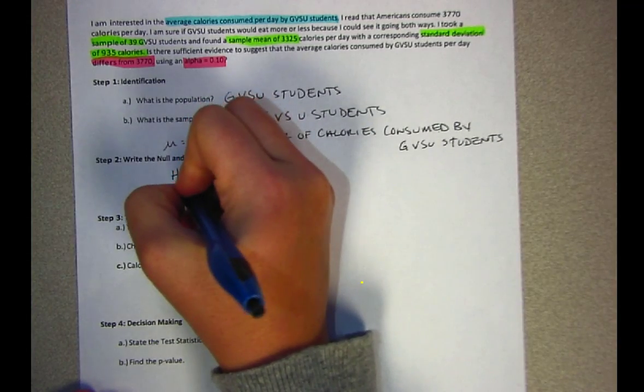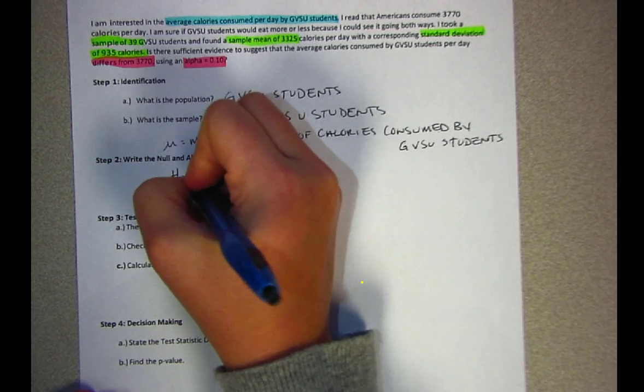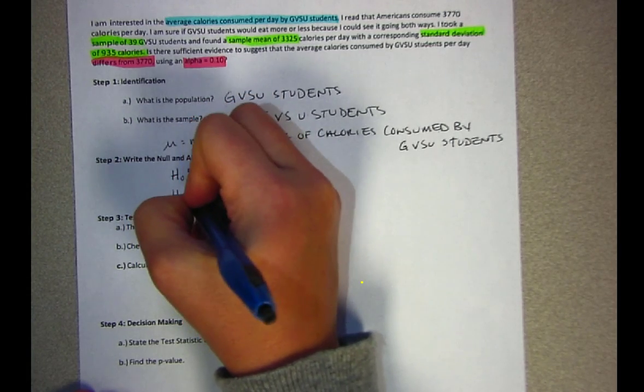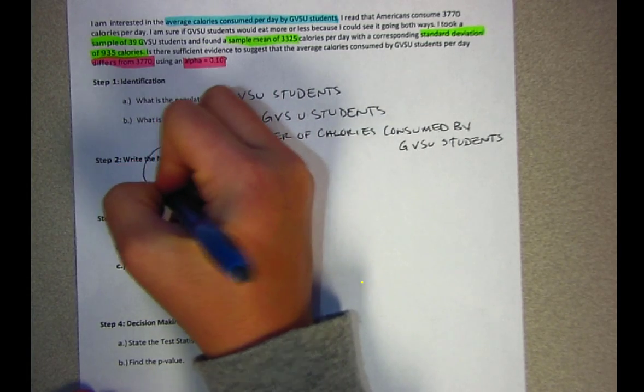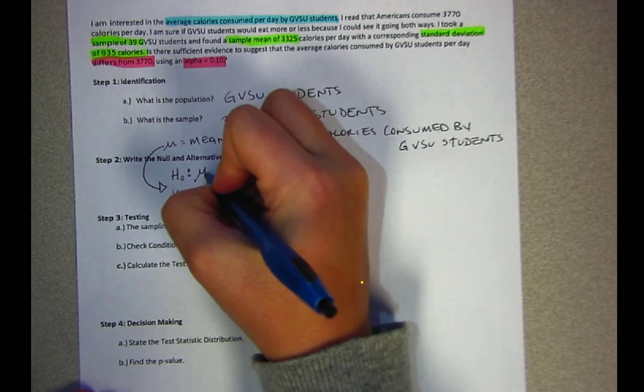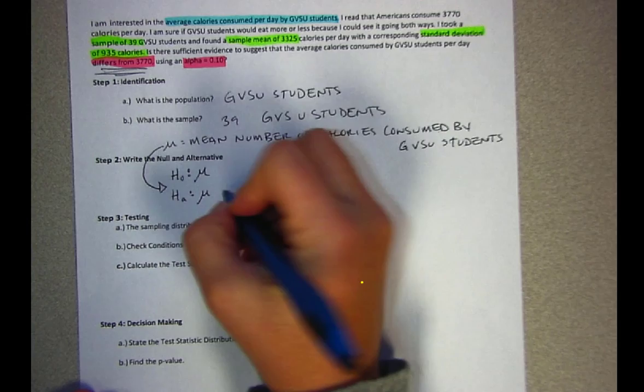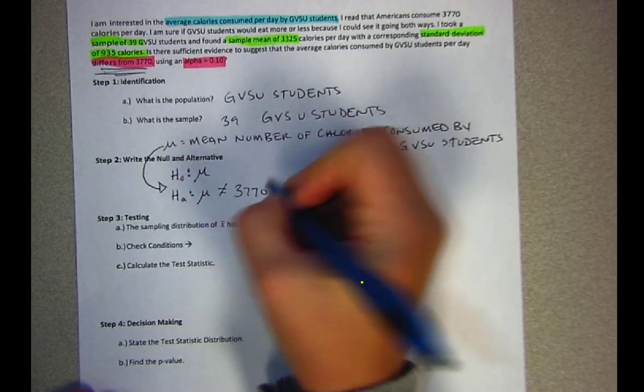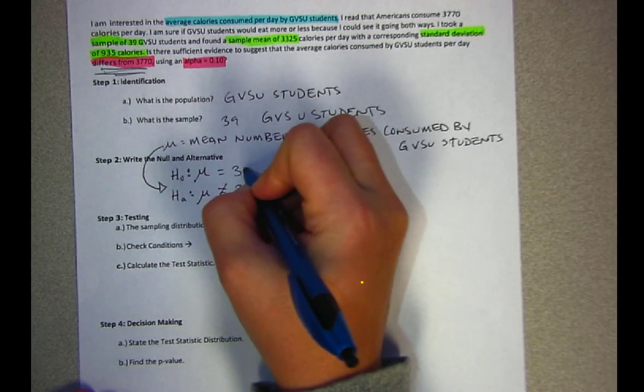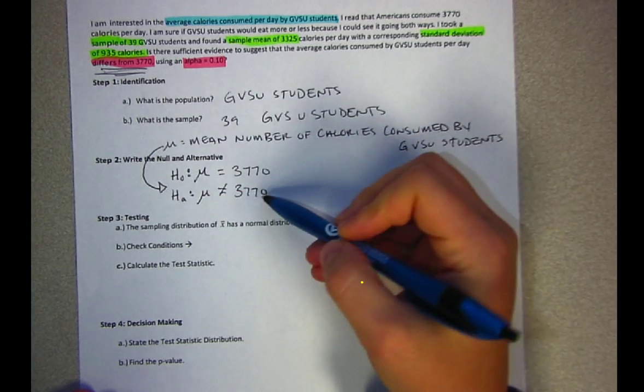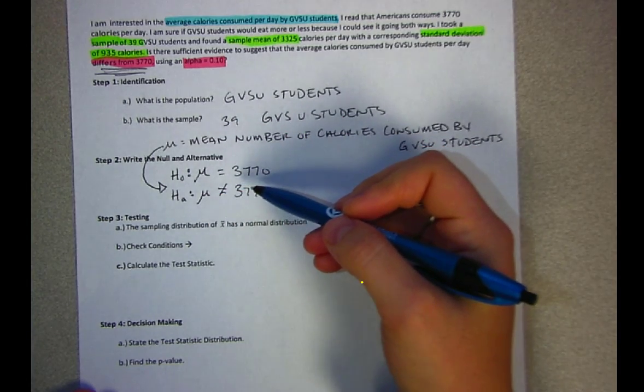Next I write my null and alternative. We have H₀ and Hₐ. The notation we use is mu. We wanted to show differs from 3770, so that's going to be my research hypothesis or alternative, and then my corresponding null is mu equals 3770.